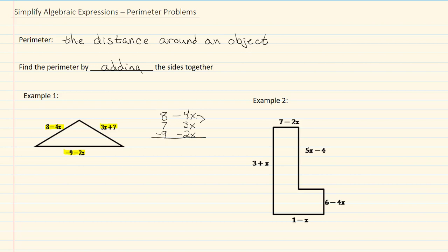So when I'm adding them up, I now just can work down my column. I have a negative 4 plus 3, which would give me a negative 1x. And negative 1 and a negative 2 will give me a negative 3.